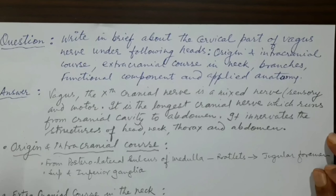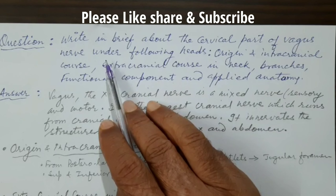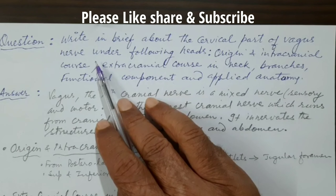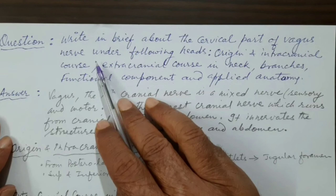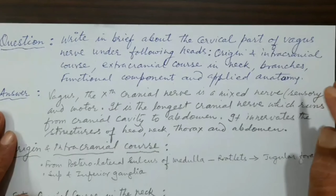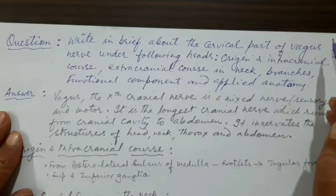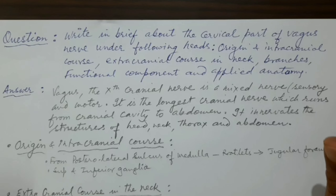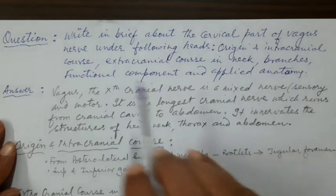The question is: write in brief about the cervical part of the vagus nerve. We will deal only with the cervical part of the vagus nerve, because after the neck this nerve goes into the thoracic cavity. Since we are dealing with topics related to the head and neck, we will confine ourselves to the neck region.